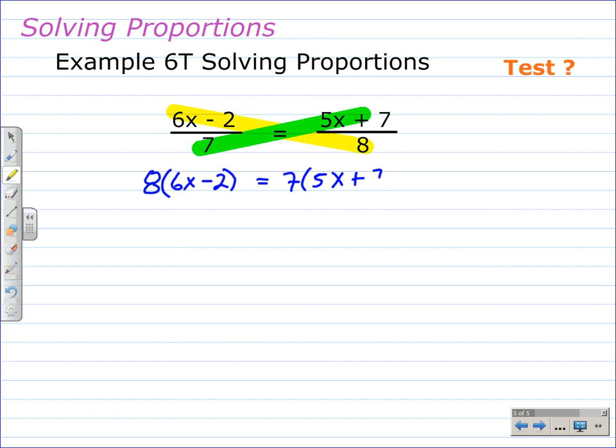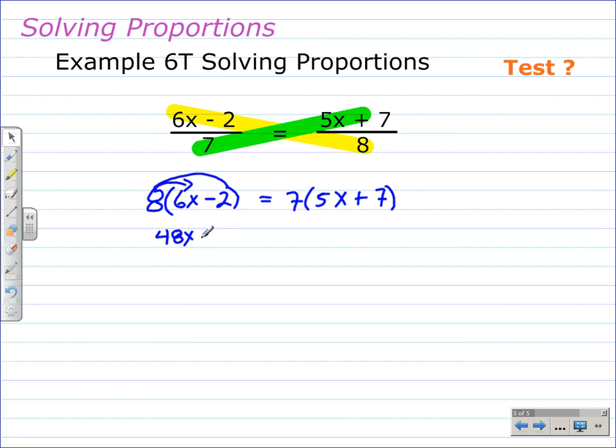So what this ends up being is an equation with variables on both sides. We've talked about that in previous video lessons. To solve this equation we'll first need to distribute and multiply 8 by both of these terms. 8 times 6x gives 48x and 8 times minus 2 is minus 16. On the right of the equal sign we have to distribute the 7. 7 times 5x is 35x and 7 times plus 7 is plus 49.